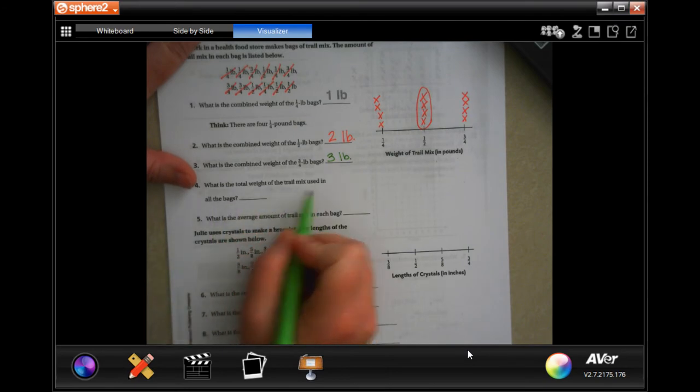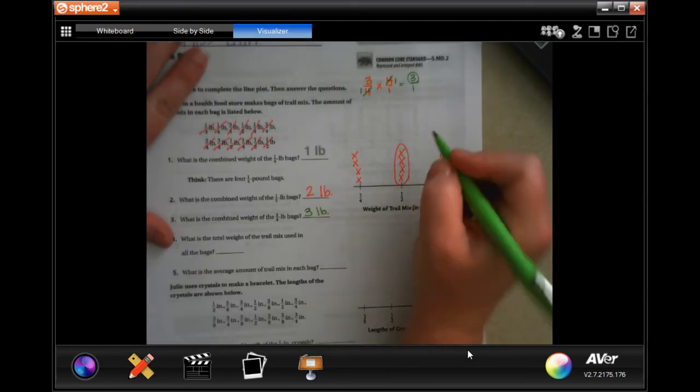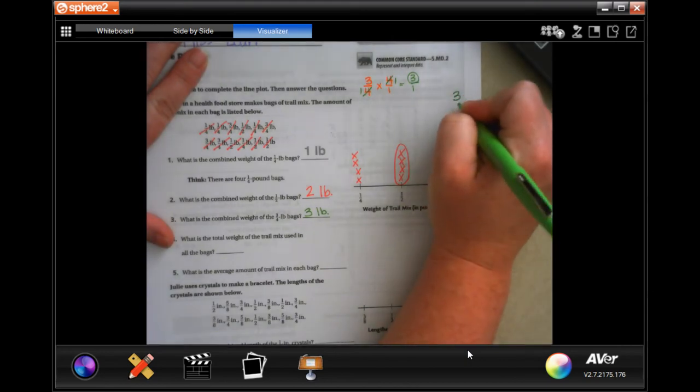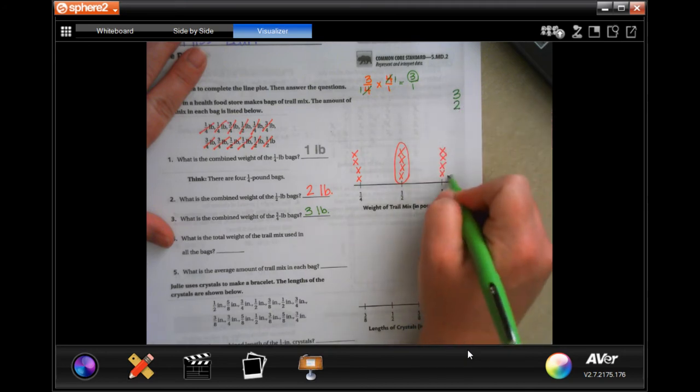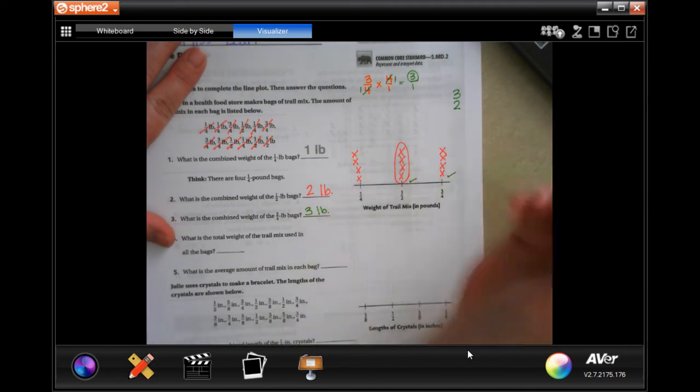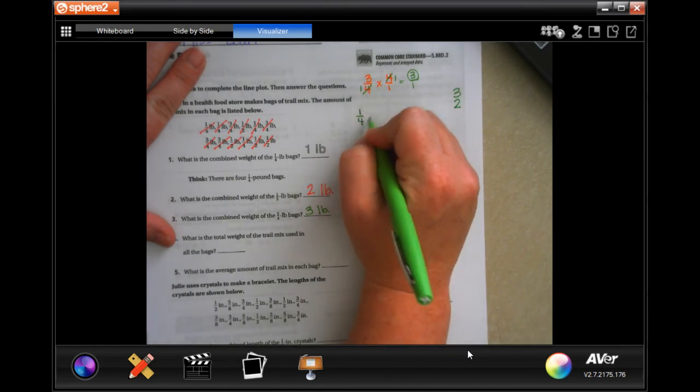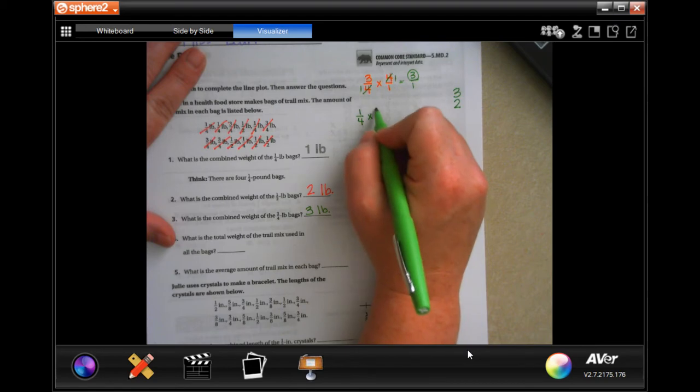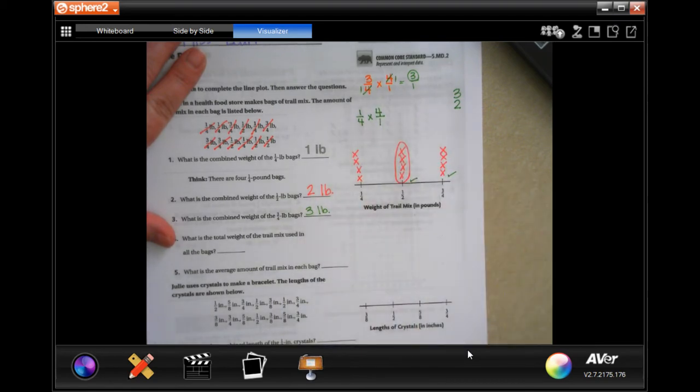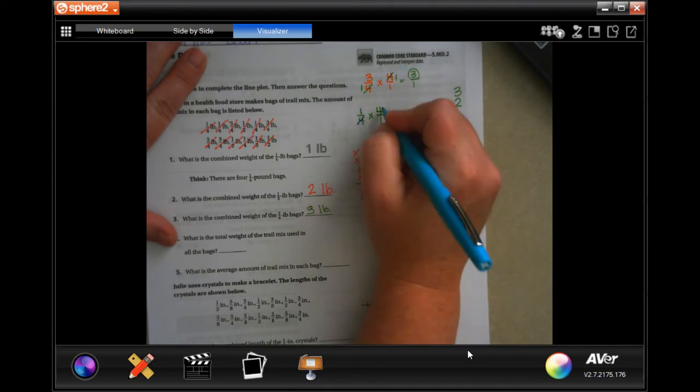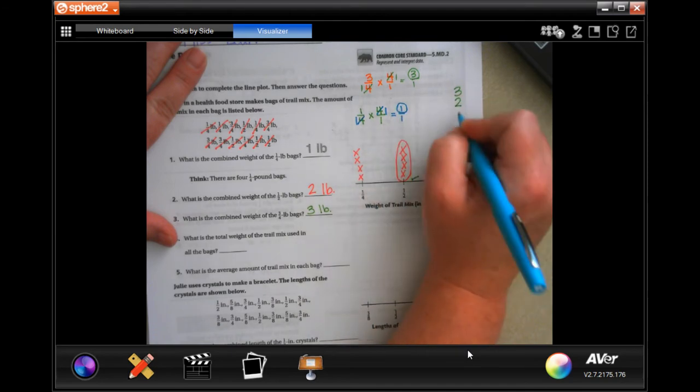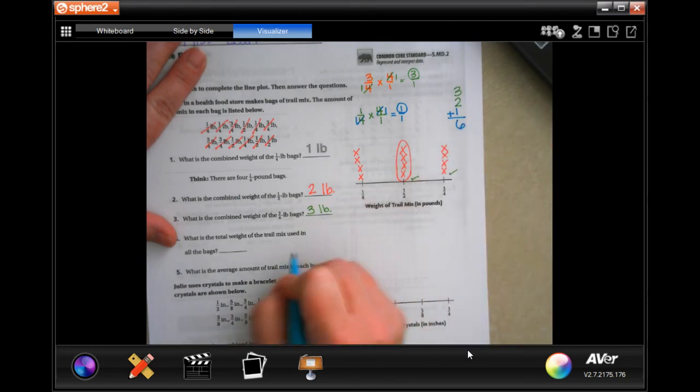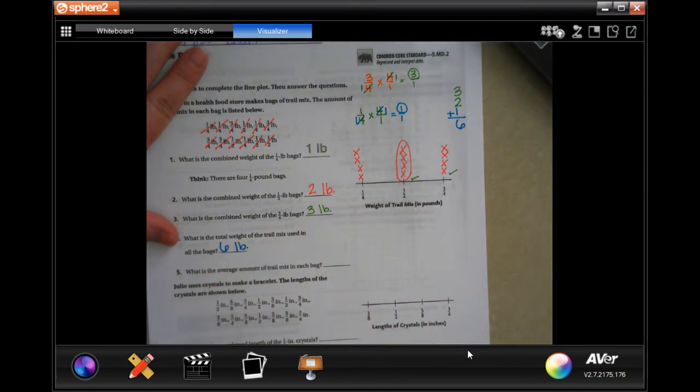What is the total weight of the trail mix used in all of the bags? We have three, we have two. Now we need to do the same for this one. One quarter times one, two, three, four. I'm going to put that over a one. Now I can cross-cancel, and those both become ones, which means we get one over one, which is just one. I'm going to add that one together. Three plus two is five, plus one is six. Six pounds.